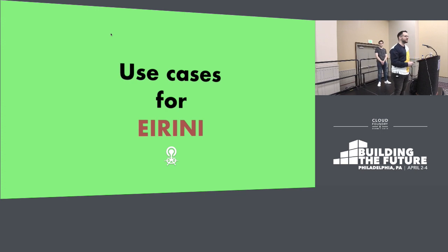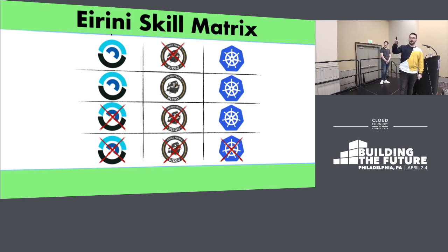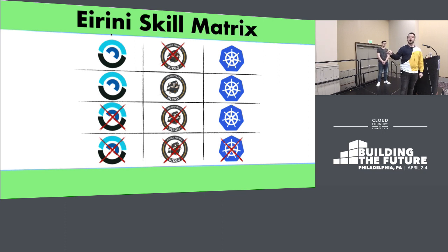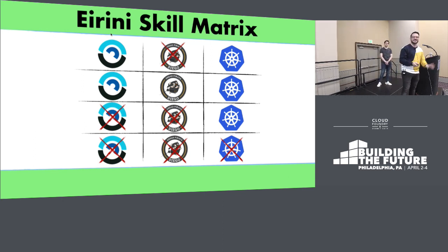Now, use cases for Irini — when do I use Irini? We came up with a skill matrix. It covers: if you have skills in Bosch and Kubernetes but not Diego; or if you have skills in all three; or if you have no Bosch or Diego skills but have Kubernetes skills; or if you don't have any skills at all. It's confusing, but it will be much clearer as we go through each one.